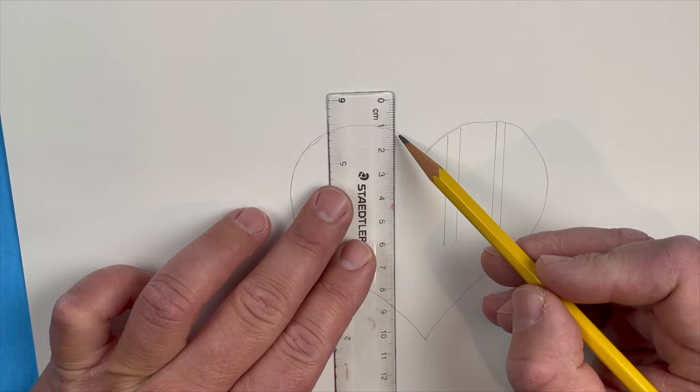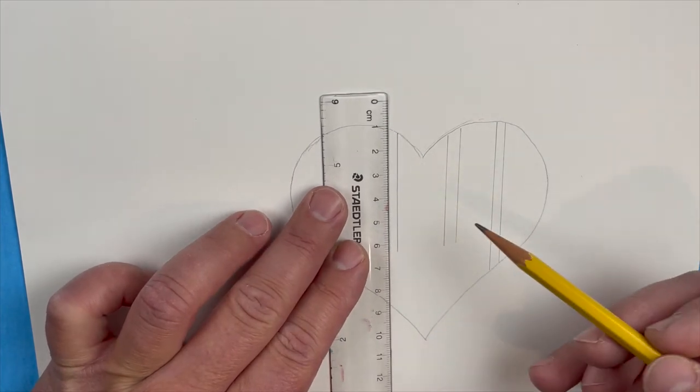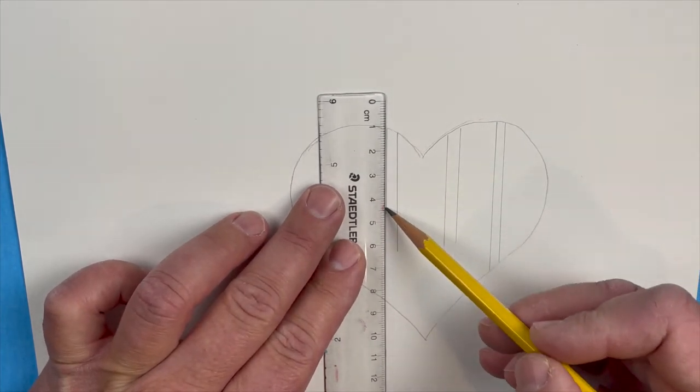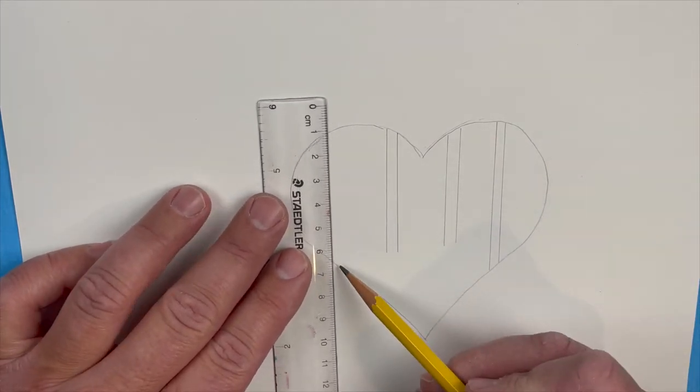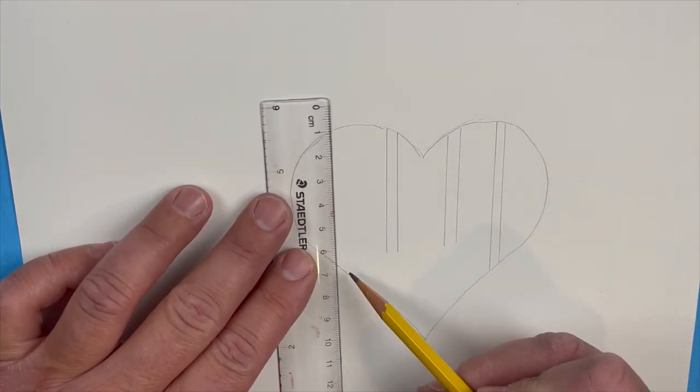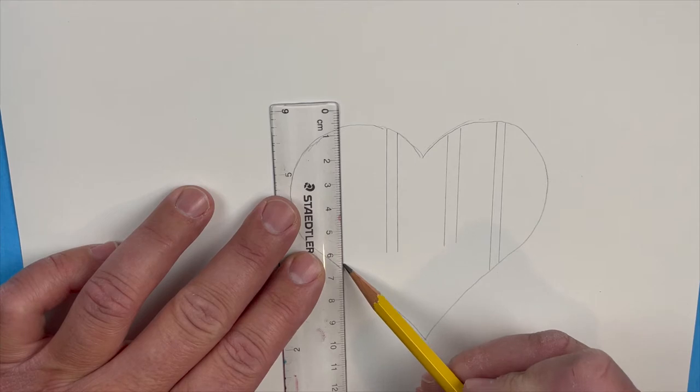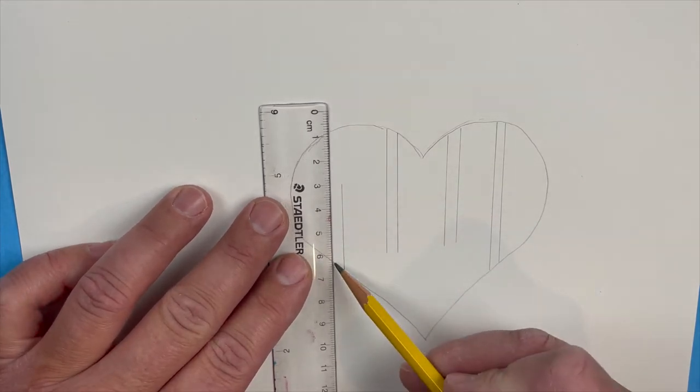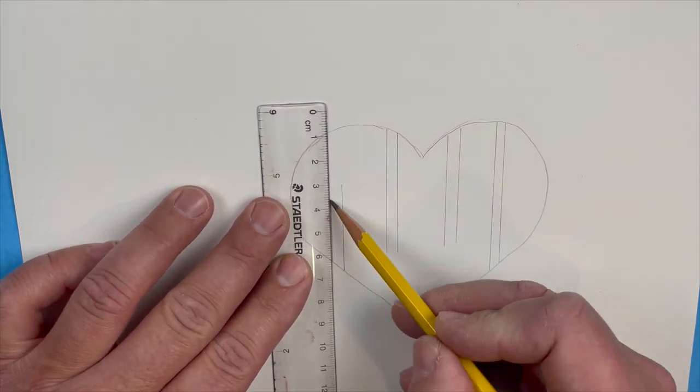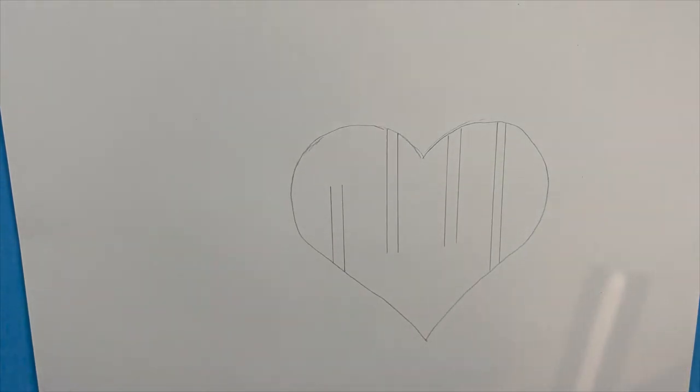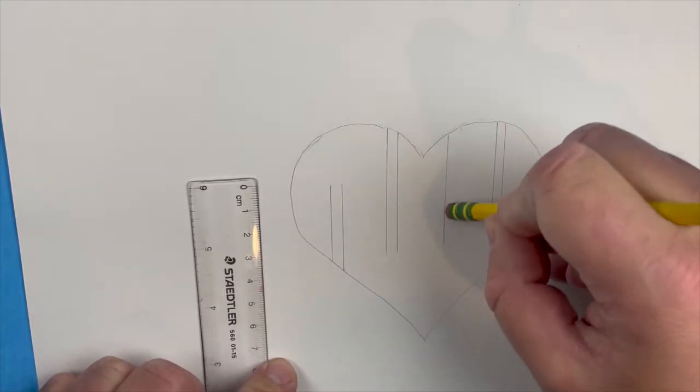The second line you're going to do the same thing but come down only to about half. The third line you're going to do the same as the second, come down about a half or so. Then the last line, kind of like the first one, you're going to go across the entire line here like that.